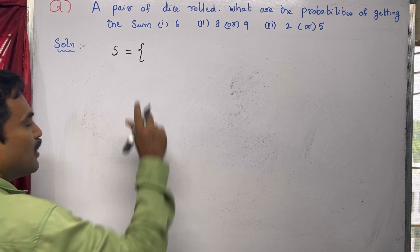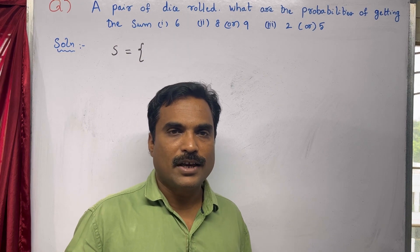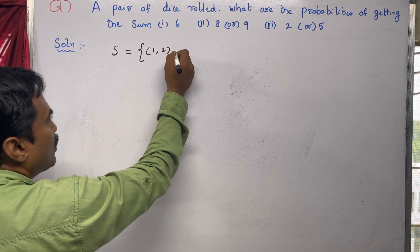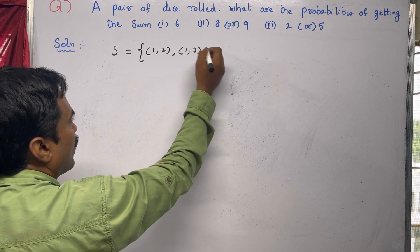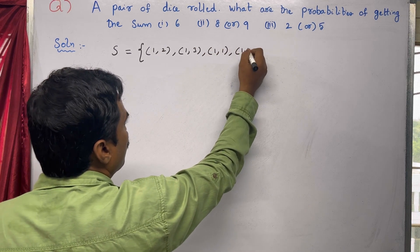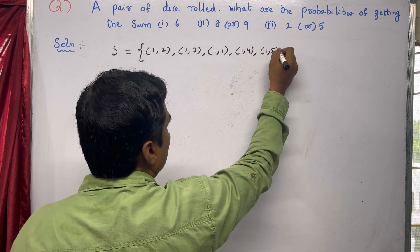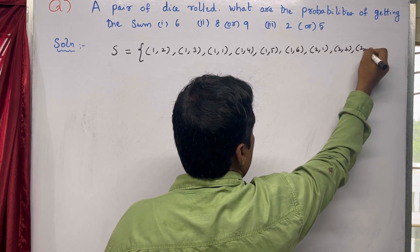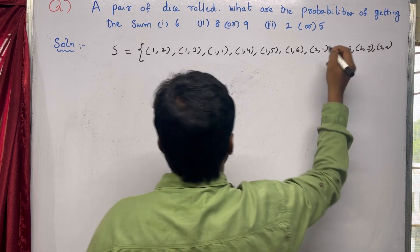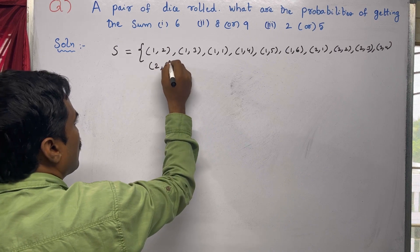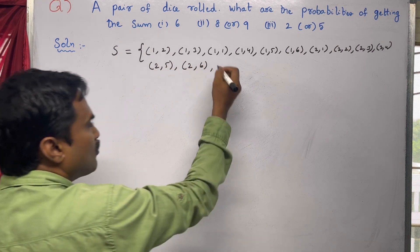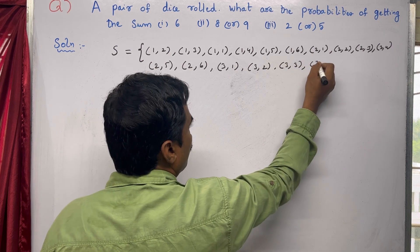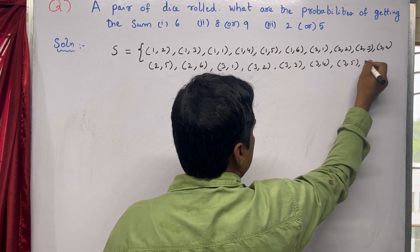Since we are rolling two dice, the sample space will look like this, because on each die you will get six possible values. So you have to pair all the values: (1,1), (1,2), (1,3), (1,4), (1,5), (1,6), then (2,1), (2,2), (2,3), (2,4), (2,5), (2,6), then (3,1), (3,2), (3,3), (3,4), (3,5), (3,6).